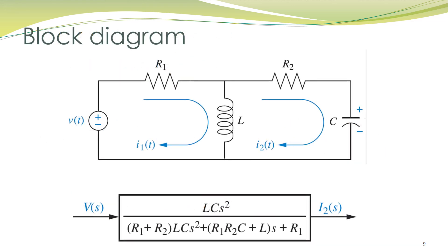In our control course, we shall represent our systems with block diagrams. For example, our electrical network can be represented by a block containing the transfer function of the system, with input V(s) and output I2(s). In the next lecture, we shall talk about mathematical modeling of electronic circuits.